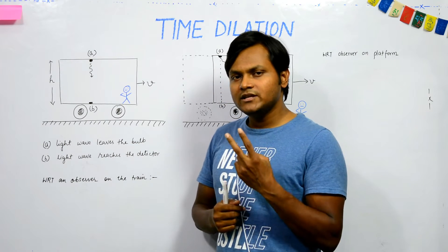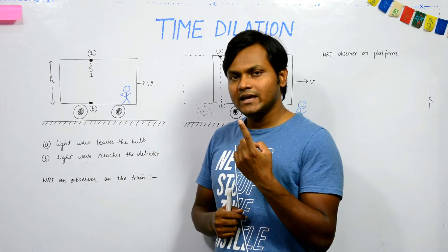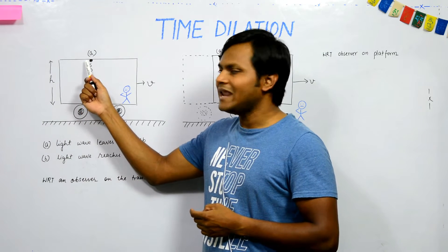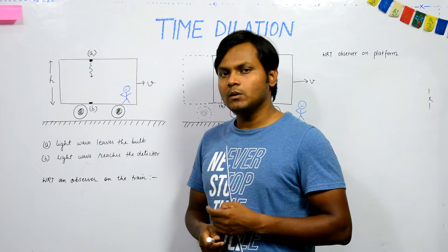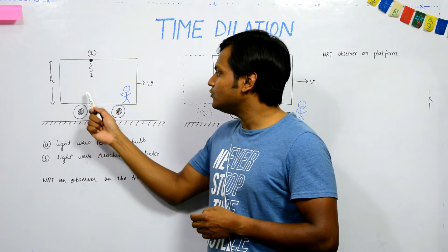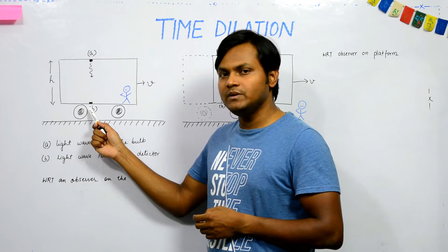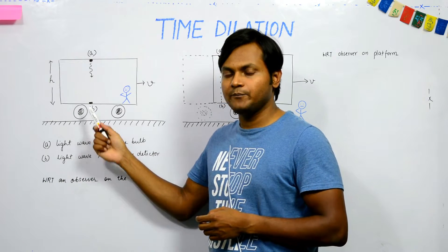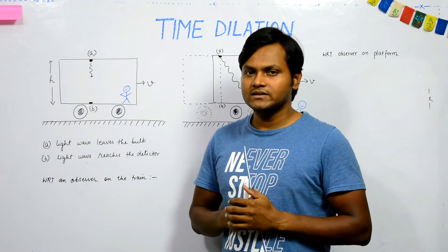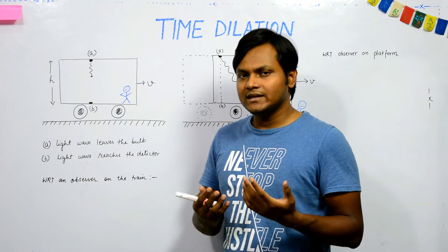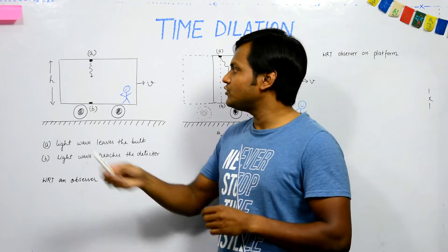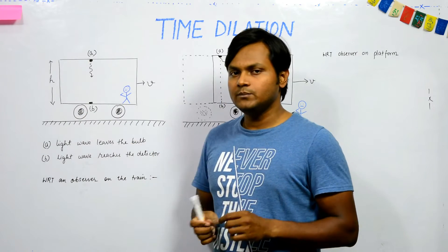Let's define two physical events. Physical event one happens when light is emitted by the bulb at point A, and physical event two happens when light reaches point B and is detected by the detector. I want to measure the time period between these two events — basically, the time it takes for light to travel from point A to point B.